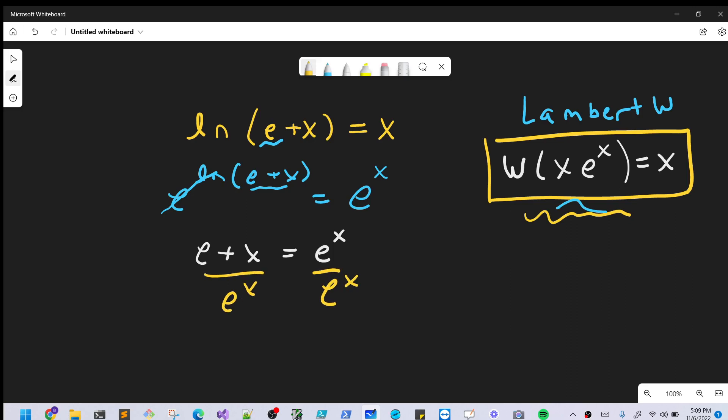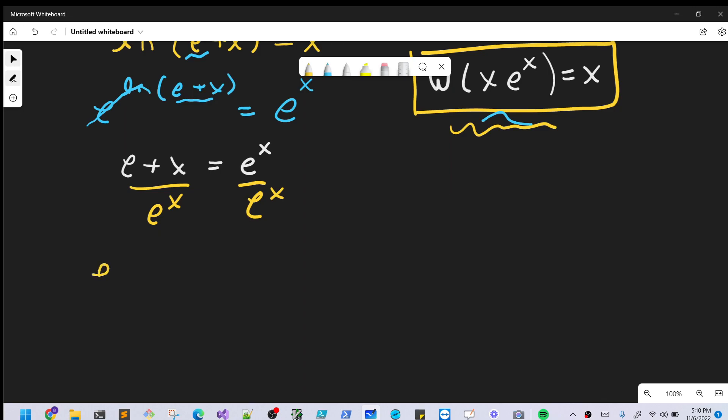And now we'll have e+x times e to the, we'll bring this into the numerator, so we have e^(-x), and just one on the right side. Then back to our strategy in this formula, we want to have this exponent and this coefficient the same. We still got a little bit of work to do.